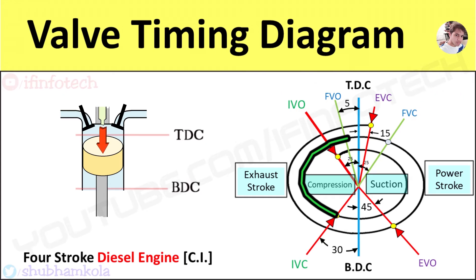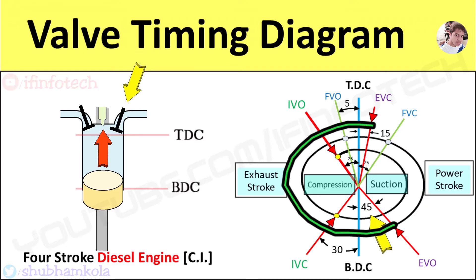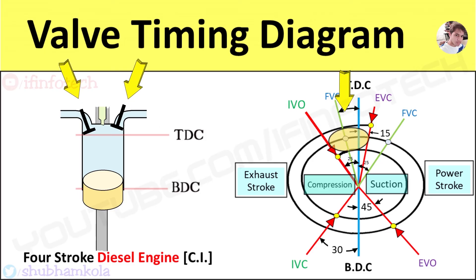The combustion of charge releases hot gases which increase pressure at constant volume. This high pressure and high temperature burned gases force the piston to perform the power stroke, also known as the expansion or working stroke. The engine produces mechanical work during the power stroke. Near the end of the power stroke, the exhaust valve opens at 45 degrees before BDC, bringing cylinder pressure to atmospheric. Exhaust gases exit at constant pressure, and the exhaust valve closes at 15 degrees after TDC. There is 30 degrees of valve overlap between the inlet and exhaust valves before the new cycle starts.